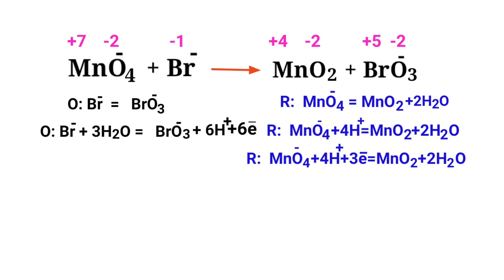Make the electron gain equivalent to the electron loss. The electrons lost in the oxidation half reaction must equal the electrons gained in the reduction half reaction. The oxidation half reaction has 6 electrons, but the reduction half reaction has only 3 electrons. To balance, multiply the reduction half reaction by a coefficient of 2.